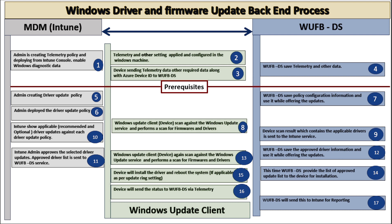Now, after the machine is configured properly and all prerequisites are in place, the admin creates a driver update policy and deploys it. Once deployed, the driver update policy is shared with the Windows Update for Business Deployment Service, and this service saves the policy configuration information and uses it while offering updates.